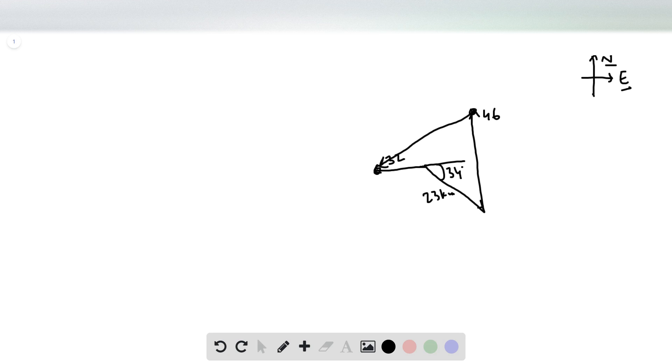The x component of the 23 kilometer vector would be 23 cos 34, whereas the y component would be 23 sin 34. Now by plugging this into a calculator, we can see that the x component is 19.07 and the y component is 12.86 kilometers.